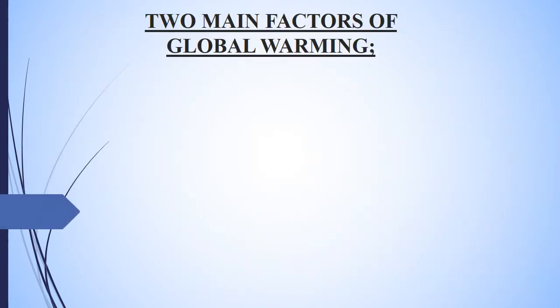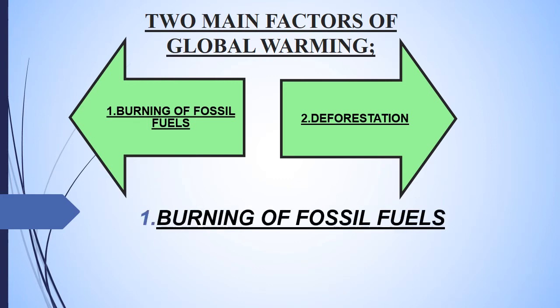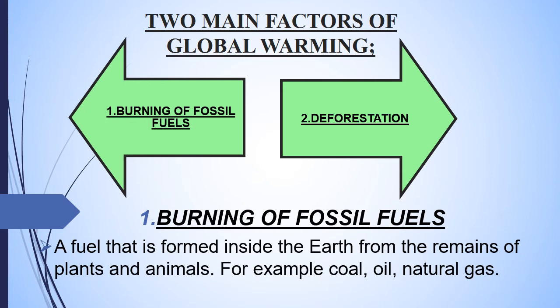The two main factors of global warming are burning of fossil fuels and deforestation. Now let us discuss how burning of fossil fuels is playing its role in climate change. A fuel that is formed inside the earth from the remains of plants and animals is called a fossil fuel — for example, coal, oil, and natural gas.